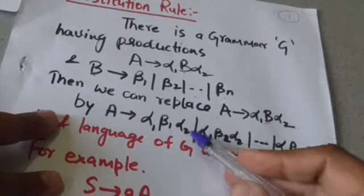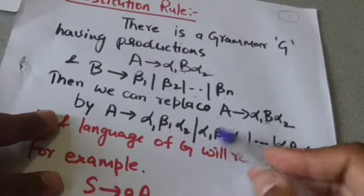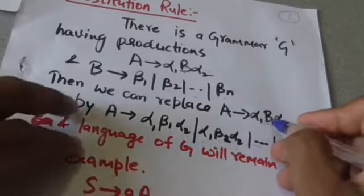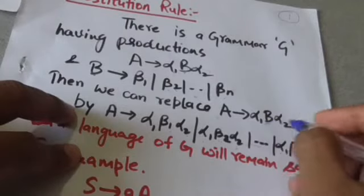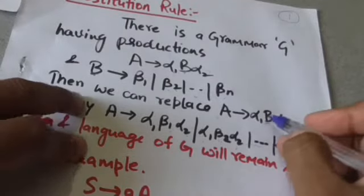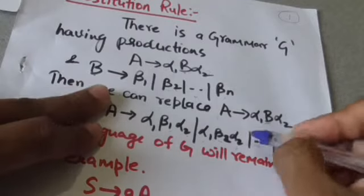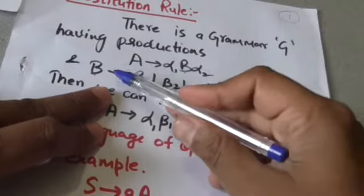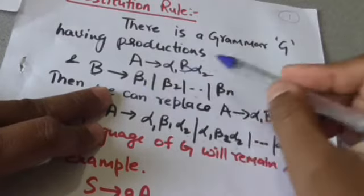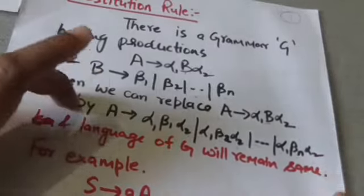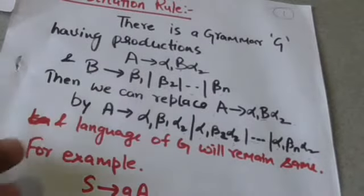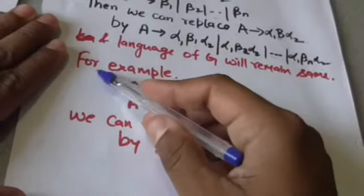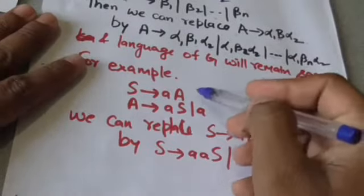These productions are obtained by replacing the variable B in this production by the strings on the right-hand side of the productions of variable B. So for example, if there is a grammar whose productions are as follows: